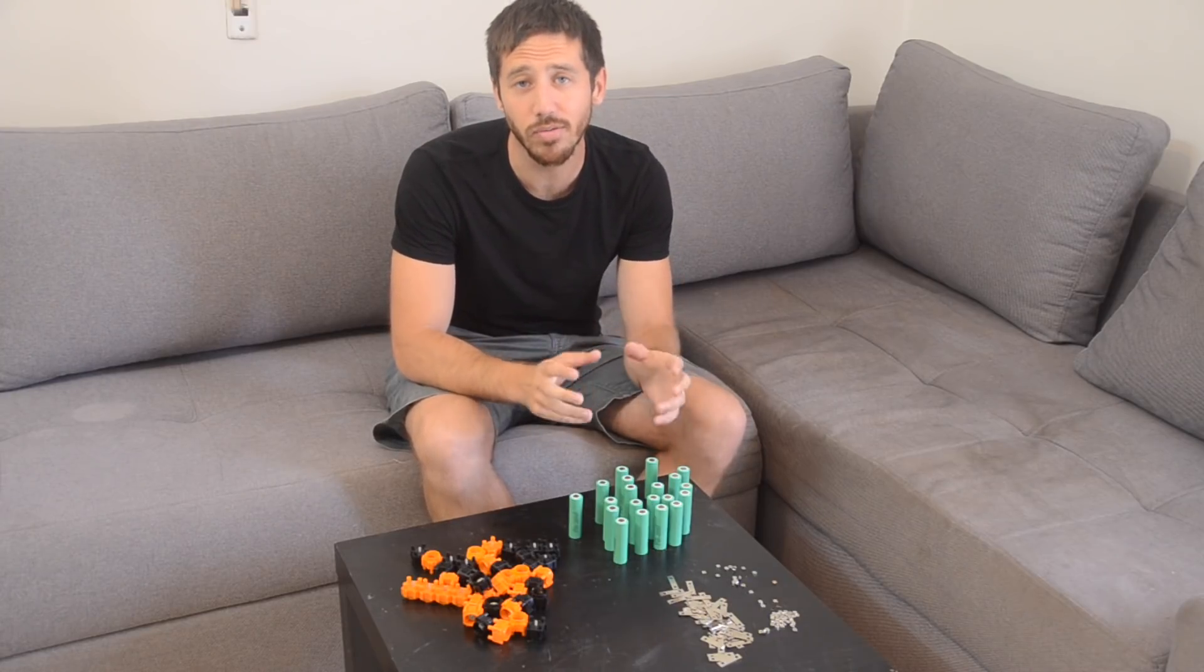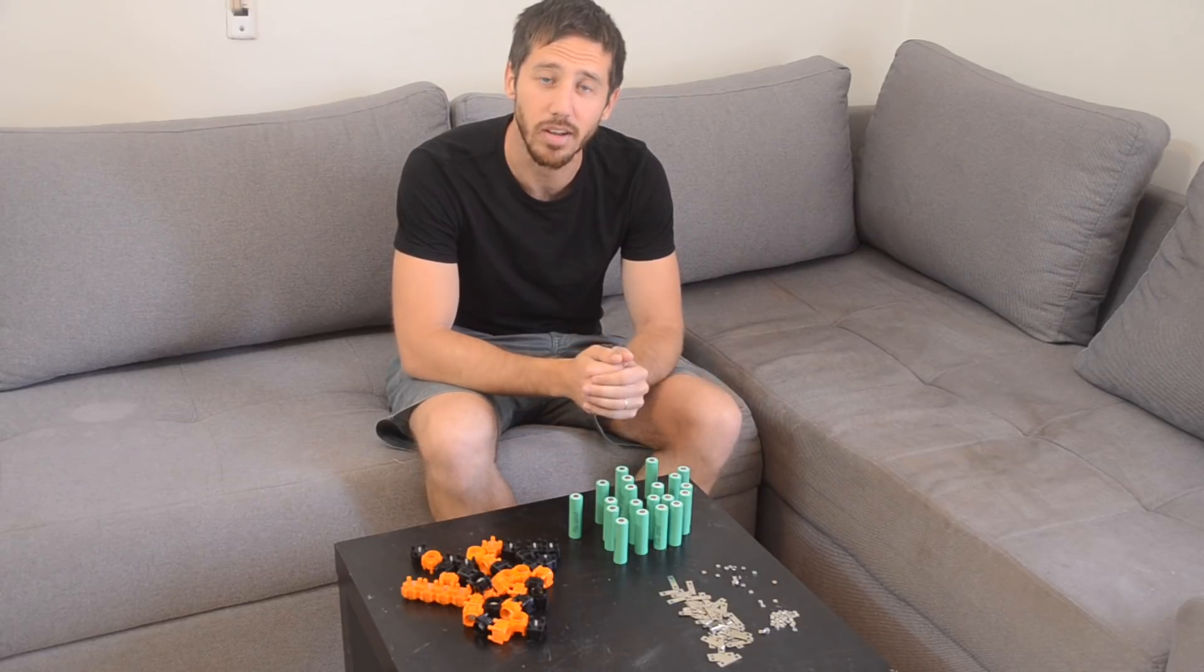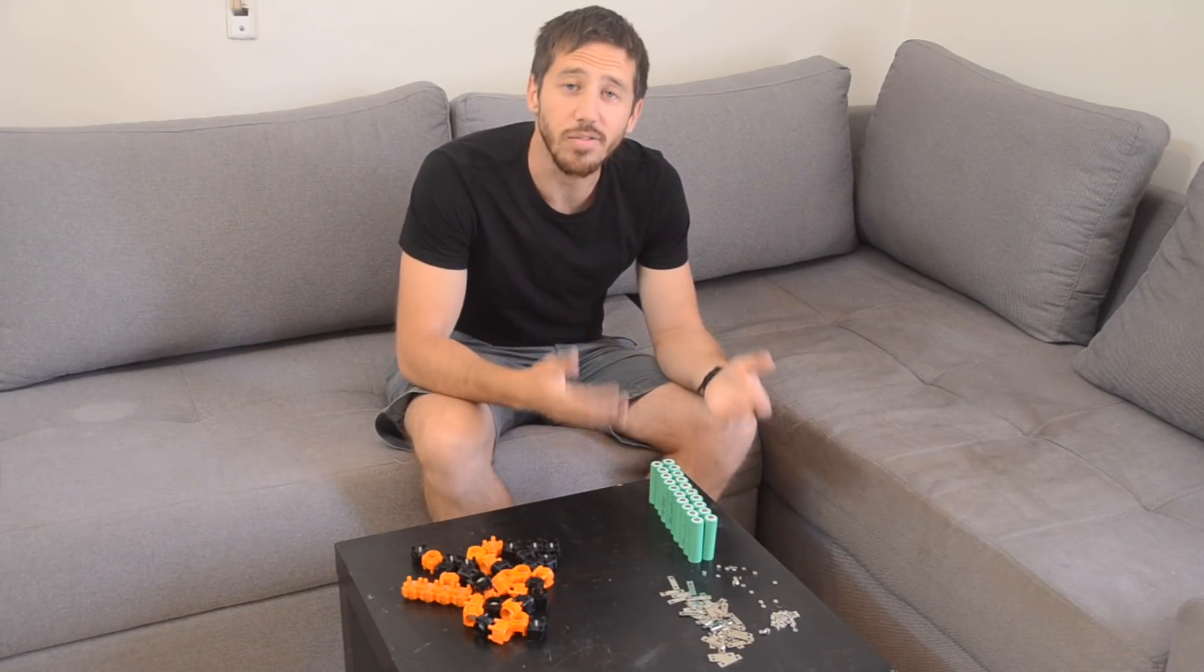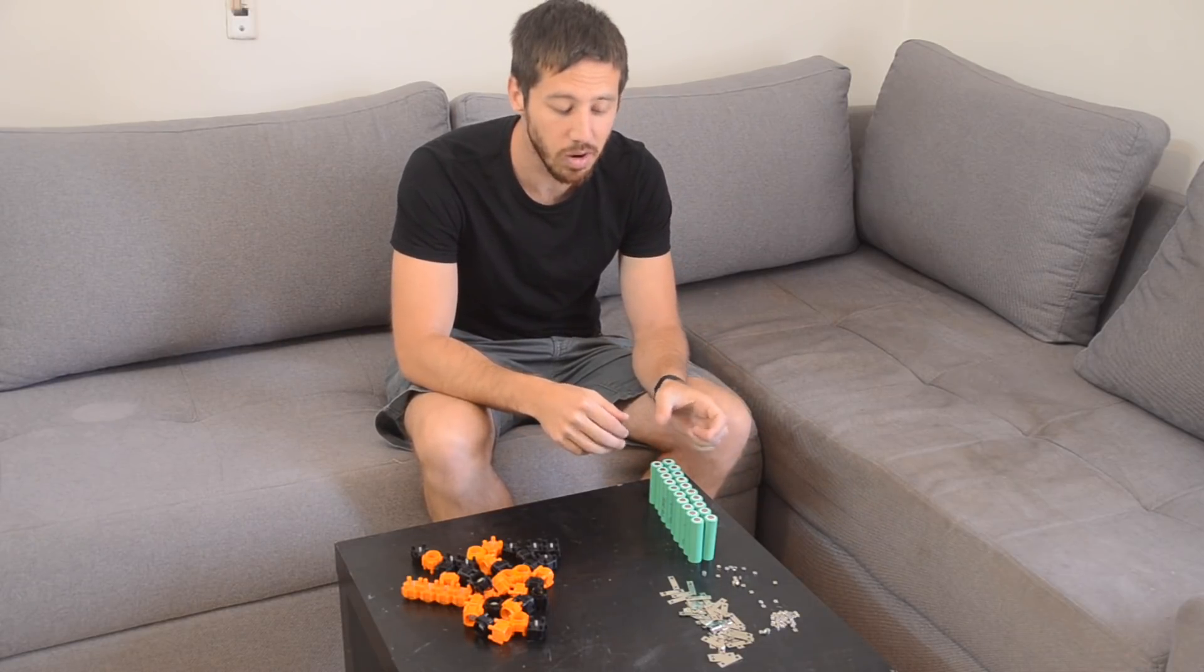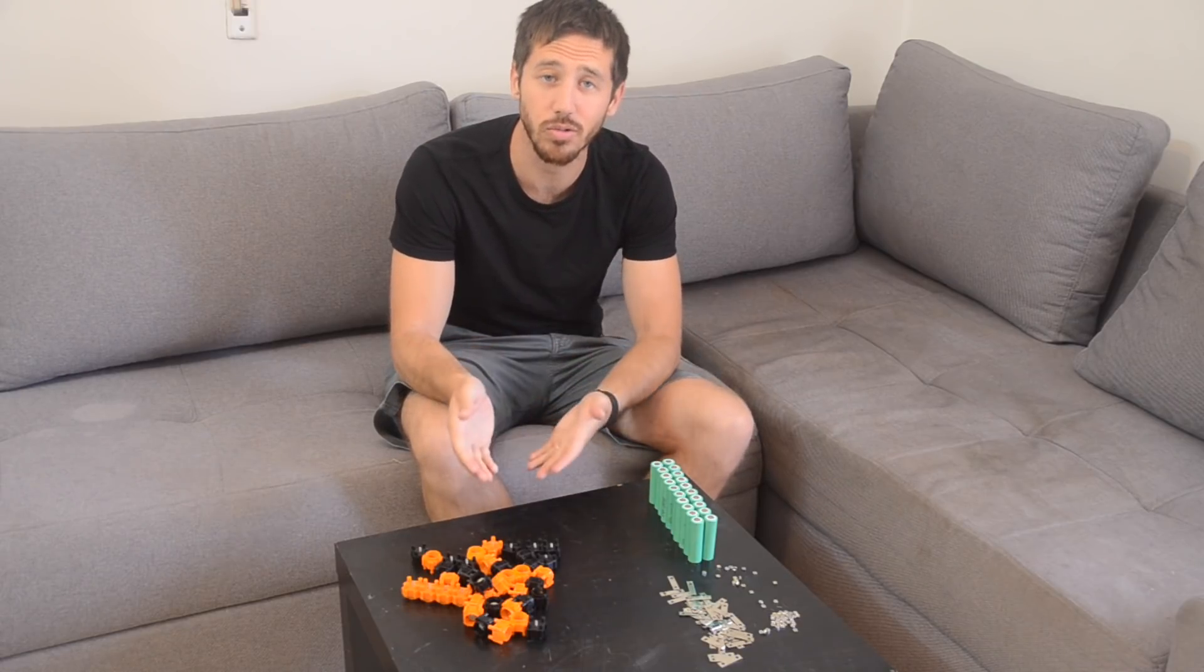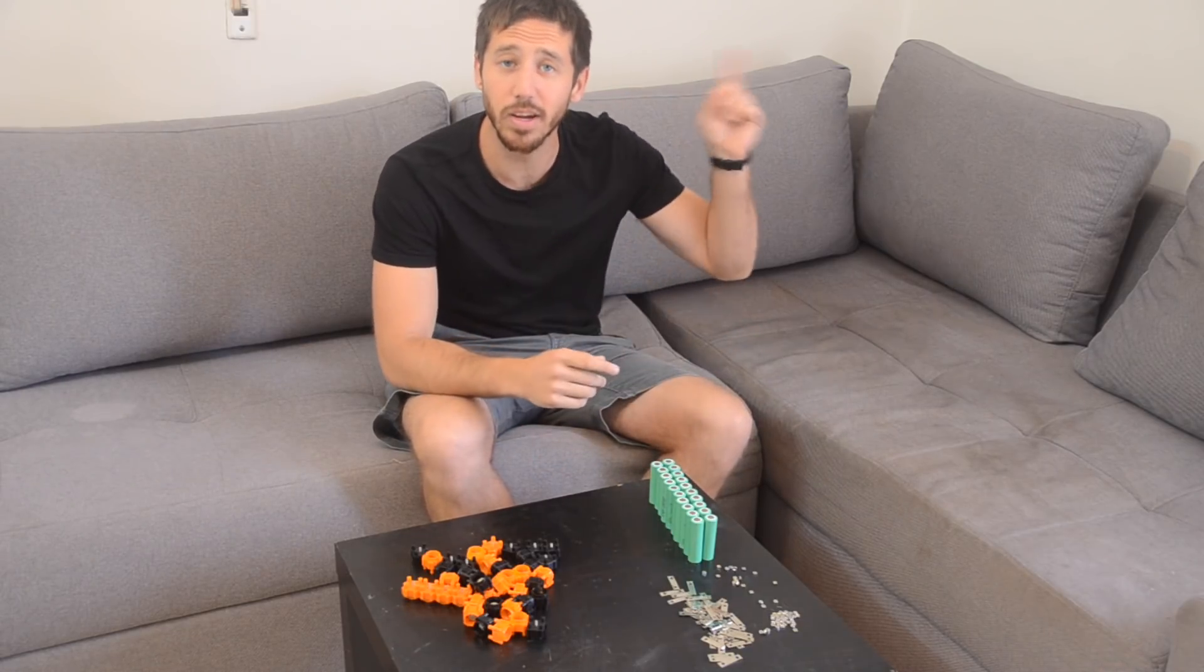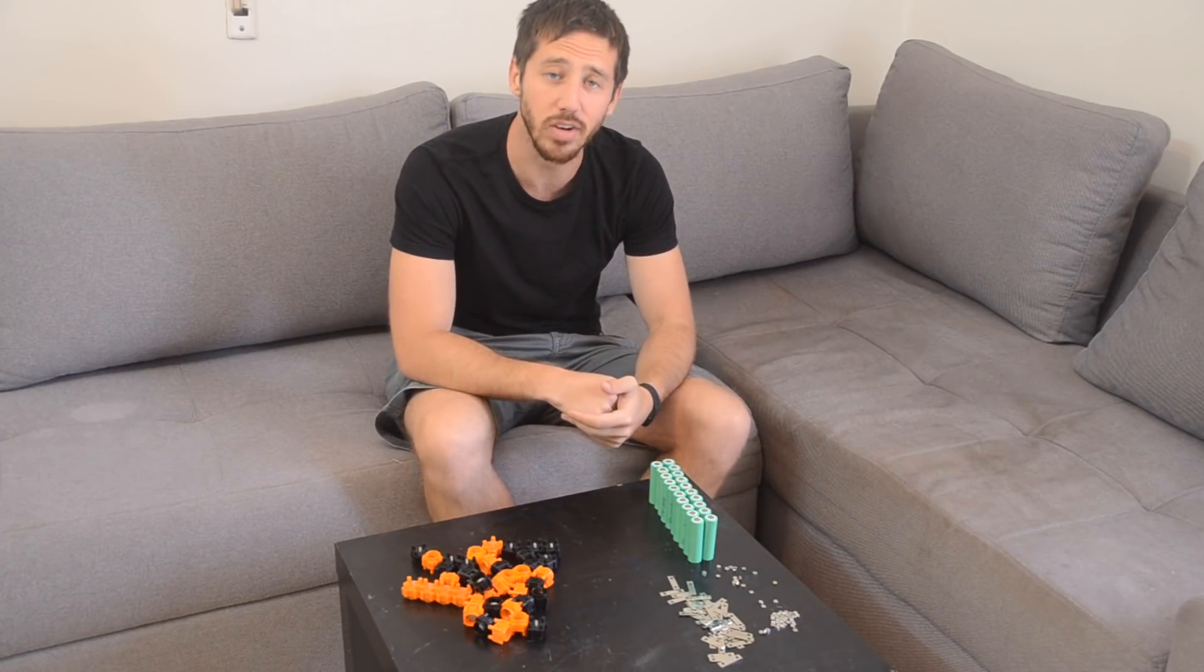Now there are two different configurations that you could use for building this type of 10S2P battery. The first configuration would look like this, where you've got 10 cells in a row but it's two cells thick. Now I've already shown how to build multiple cell thick battery packs using the Vruzen kits. I'll put a link up here to my last video that showed how to do this or you can just go back and check my past videos.